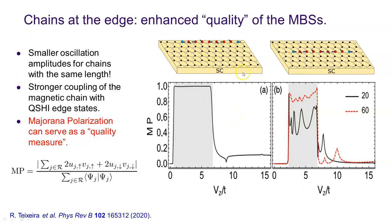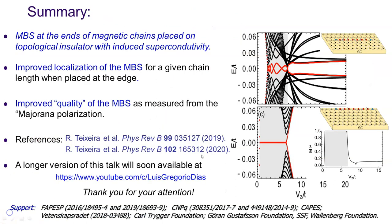In summary: we show Majorana bound states at the ends of magnetic chains placed on a topological insulator with induced superconductivity. Moving the chains from center to edge improves localization — shown by decreased energy splittings — and improves quality as measured by Majorana polarization. These results are published in two references: the first establishes the phase diagrams, and the second studies the effect of moving the chain to the edge. Thank you for your attention, and I'll see you in another video.